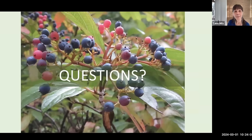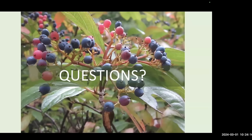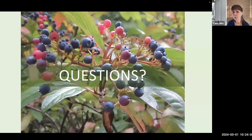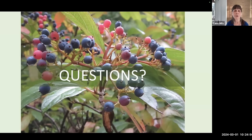Q: Some viburnums are invasive and some are native. What is the best way to ensure they are getting native viburnums? The best thing to do would be to refer to the names provided on your handout. You'll want to look for these plants by their scientific name. Native-only sellers will always list plants by scientific name. If you see a name like Viburnum dentatum or Viburnum nudum, you'll know those are native species. The non-native invasive species include Linden viburnum and Siebold viburnum.